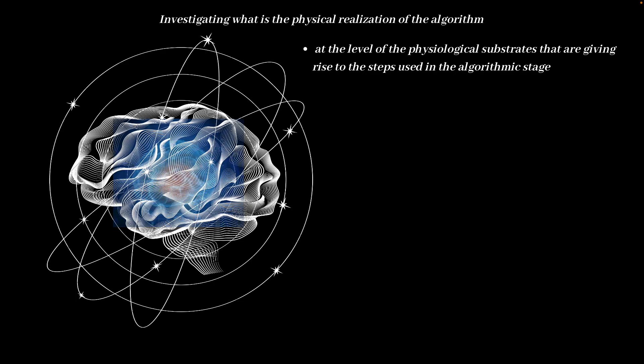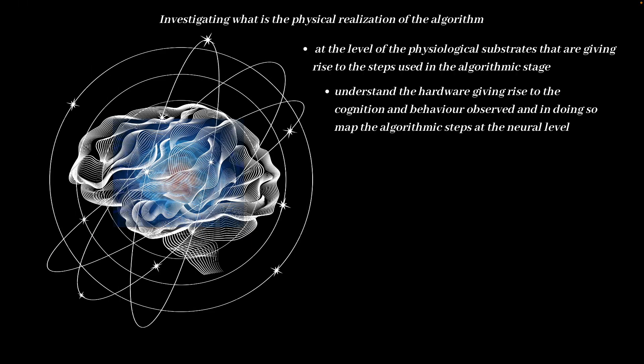At the physical and or the implementational level, we're essentially investigating what is the physical realization of the algorithm that we have just discerned at the algorithmic level of analysis. In this level of analysis, we're essentially asking questions about the physical, and in this case of cognitive psychology or cognitive neuropsychology, questions at the level of physiology or physiological substrates that are giving rise to the steps used in the algorithmic stage by the information processing system. Here our goal is to understand the hardware that is giving rise to the cognition and behavior observed, and in doing so map the algorithmic steps at the neural level.